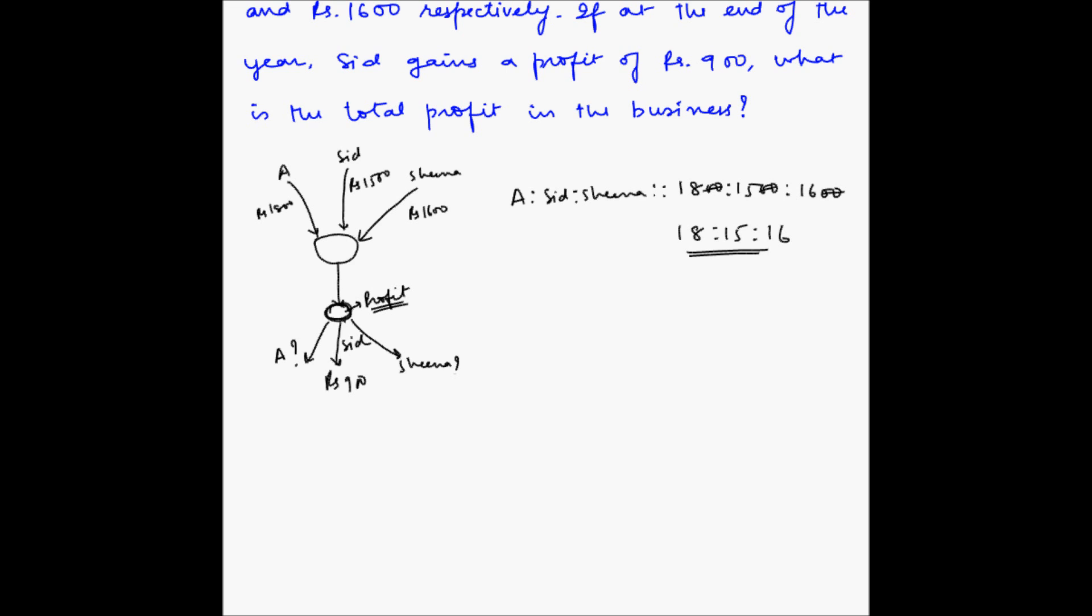Now the 15 parts is equal to 900 rupees. So what this means is, let's say P is the profit. Now we have to divide this P into 49 equal parts. So this divided by 49 and we have to take 15 such parts. So multiply by 15 and this is equal to 900.